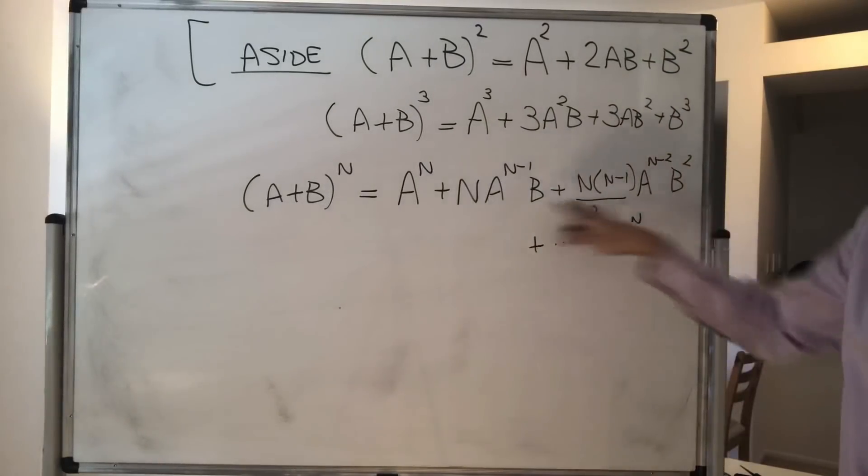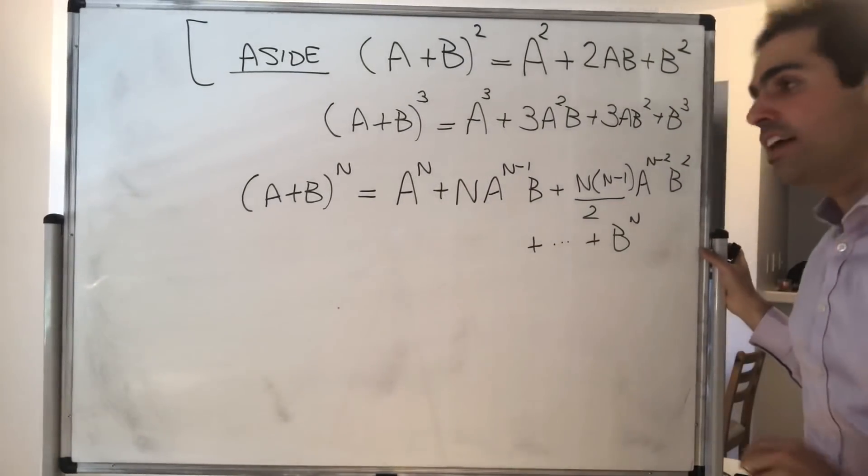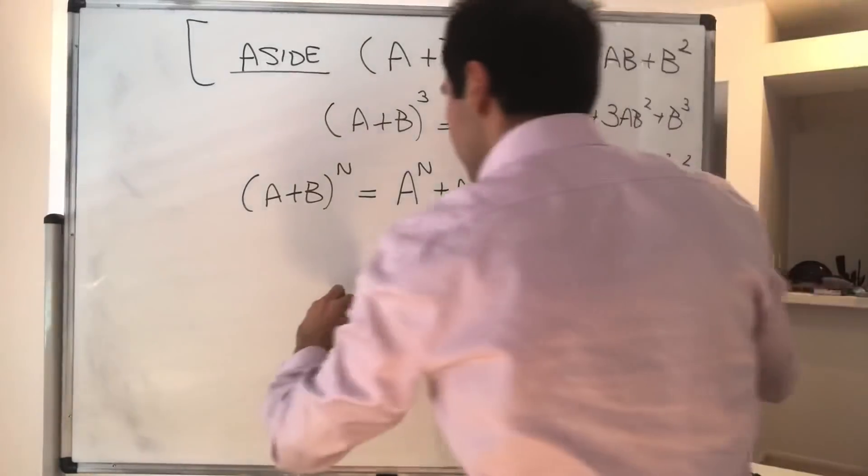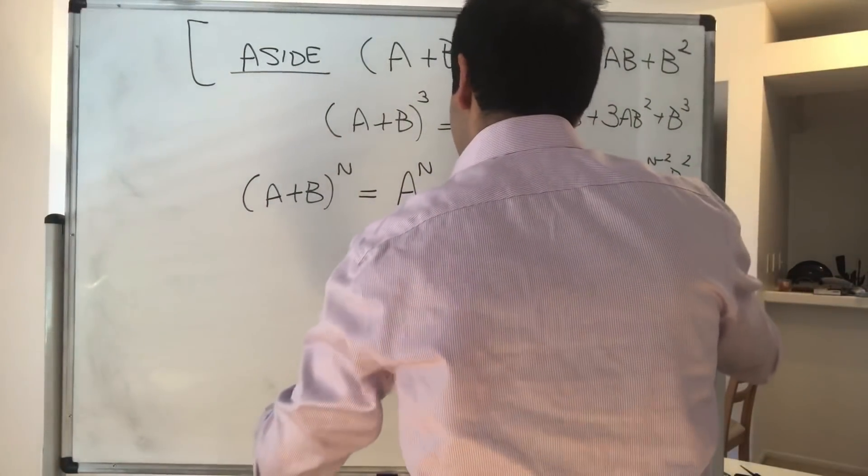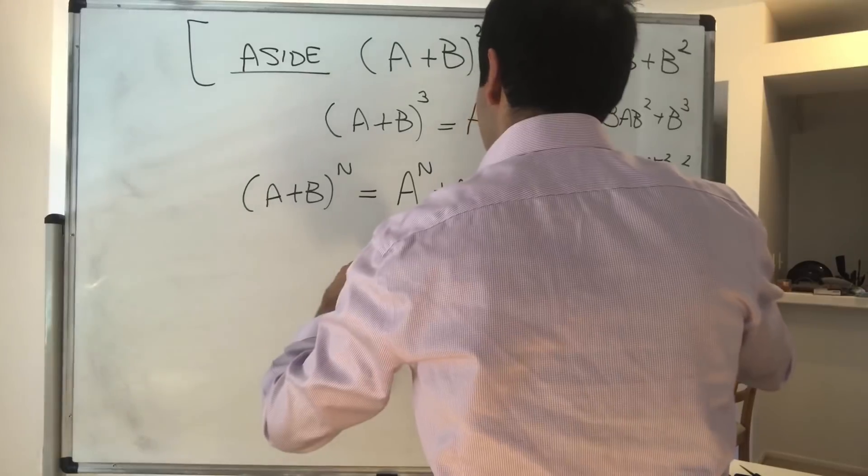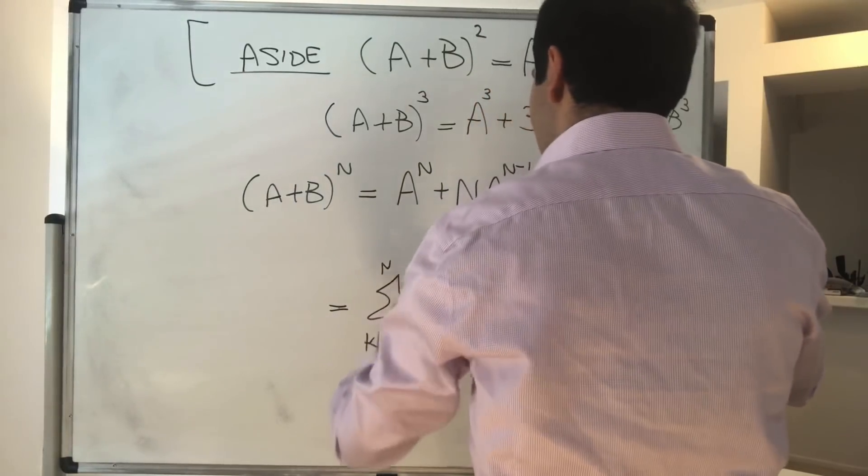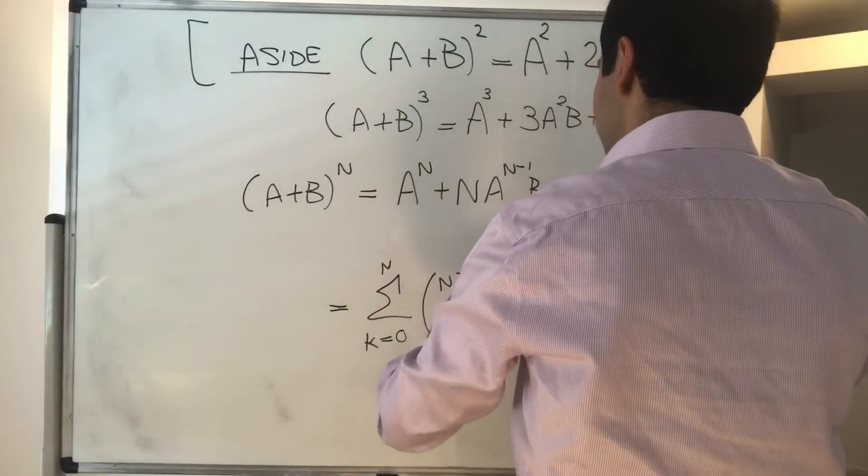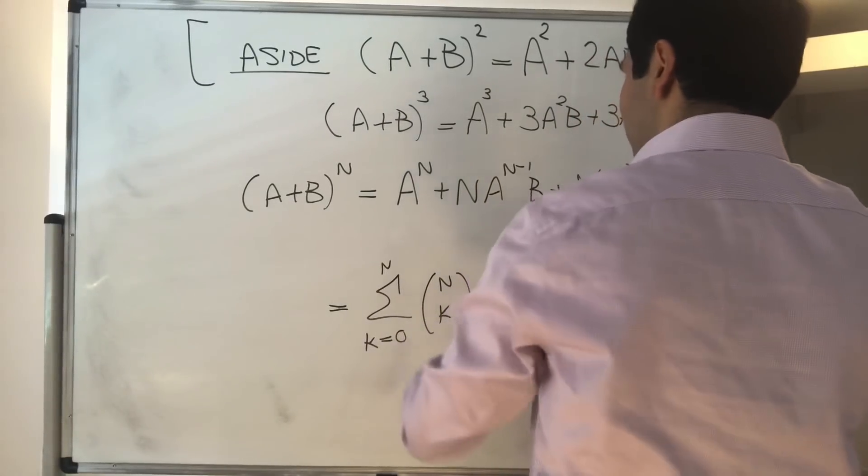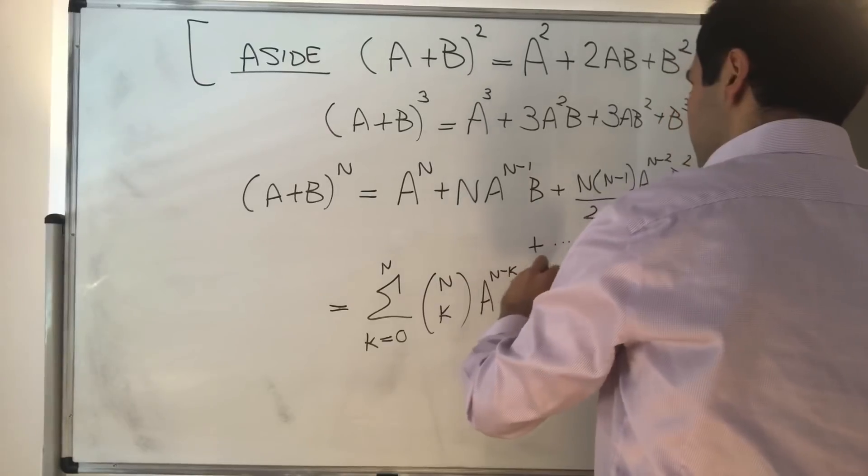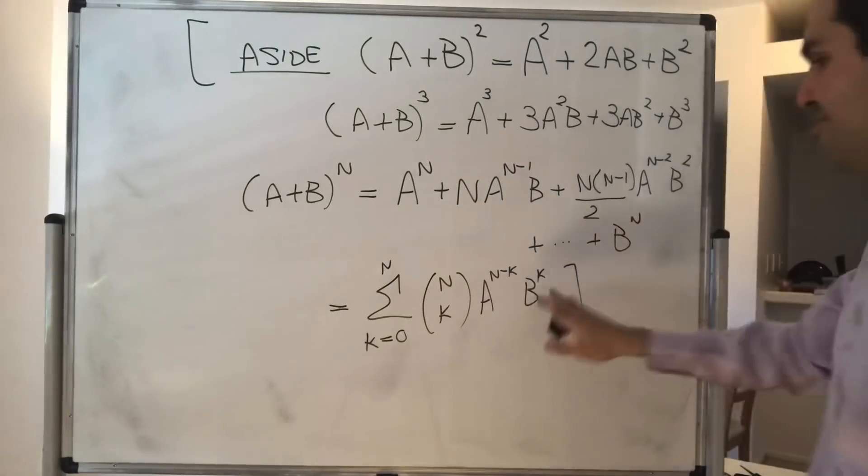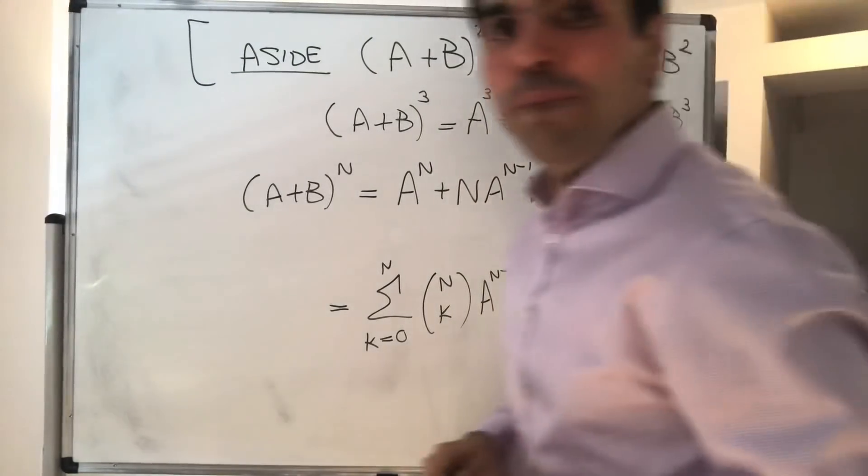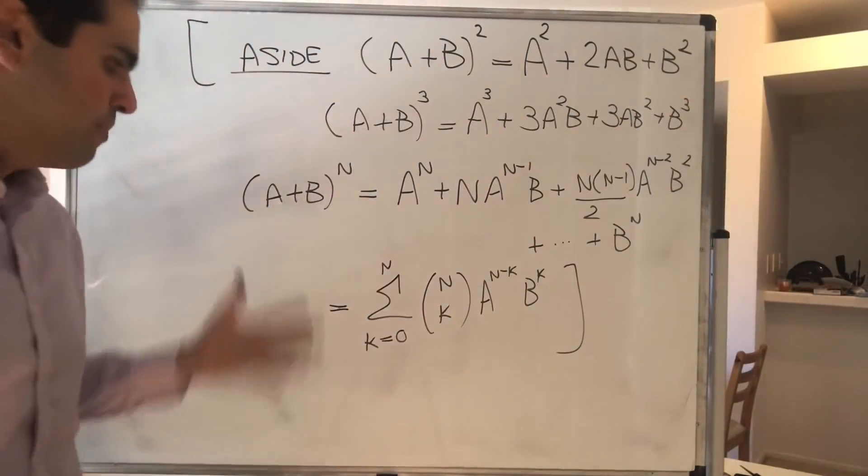And we only need the first three terms for today and next time, but if you want, you can just write this more generally as the sum from 0 to n of n choose k. Again, the powers of a are decreasing, so a to the n minus k times b to the k. Not Burger King, but b to the power of k.